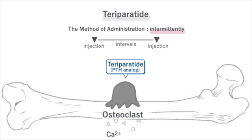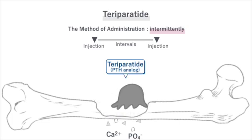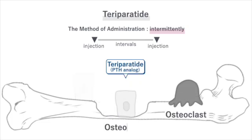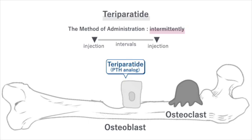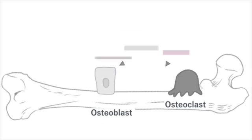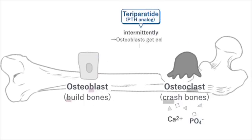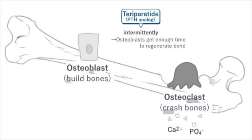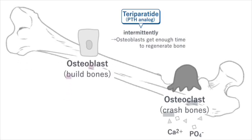Teriparatide, a part of PTH with a weaker effect than PTH, induces bone resorption by osteoclasts, thereby increasing the activity of osteoblasts. By allowing sufficient time, osteoblasts have enough time to regenerate bone. In this way, bone repair by osteoblasts surpasses bone resorption by osteoclasts. This is the mechanism of action of teriparatide.